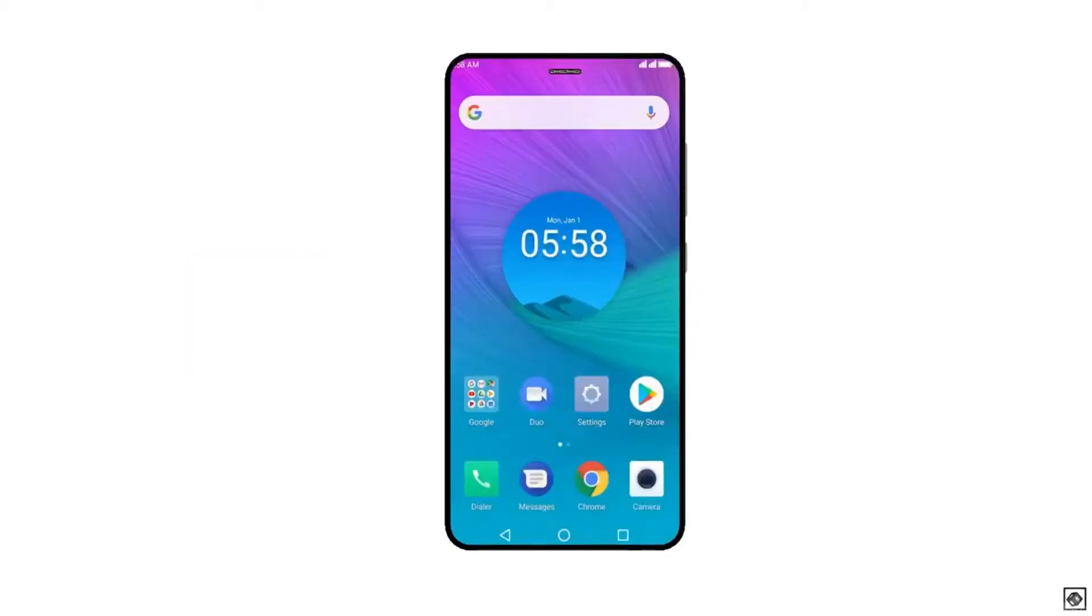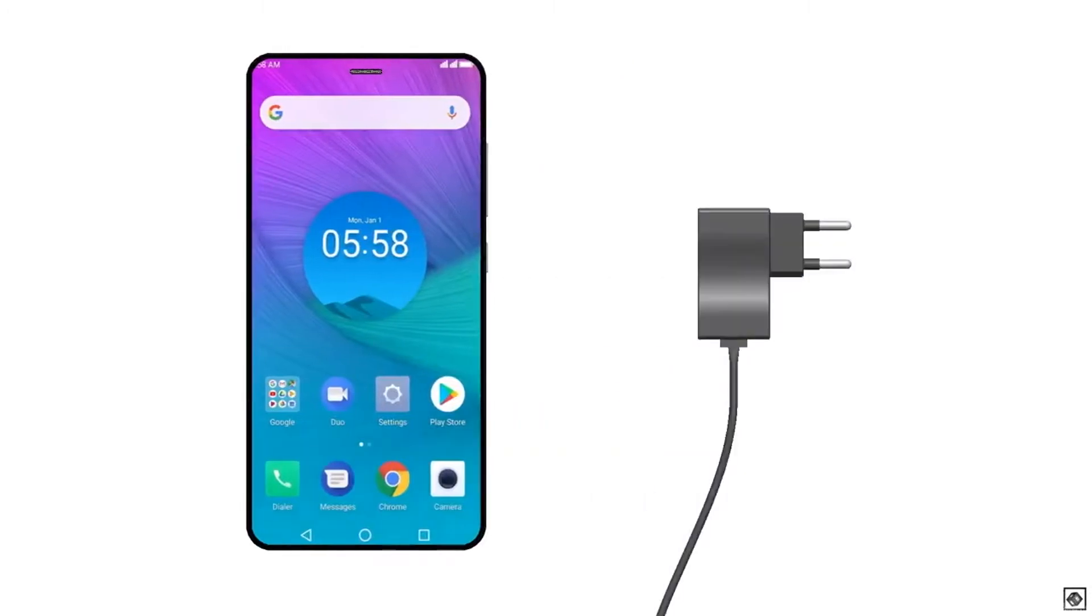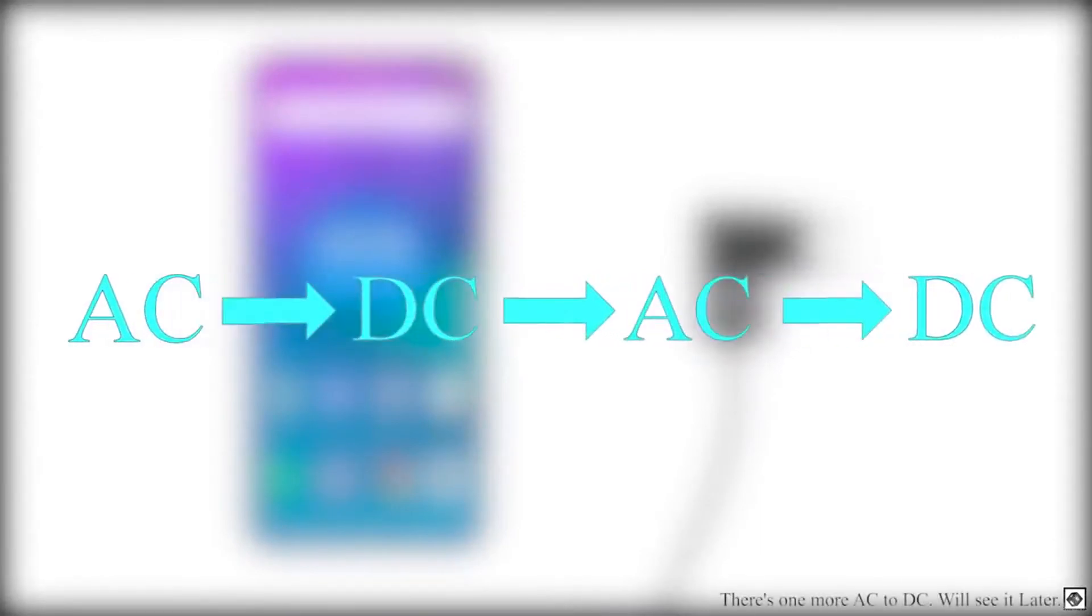We use our smartphones every day, but have you ever wondered how your smartphone charger works? You would know that chargers convert AC to DC, but it's not that straightforward. First it converts AC to DC, then again back to AC, and then finally to DC. Today we're going to see how the charger does this and why there are intermediate steps.